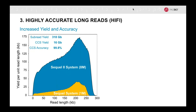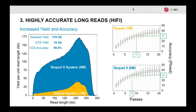I want to close with a comparison between the SQL system and the new Sequel II system for HiFi reads. The read length distribution is similar for Sequel and Sequel II, although the throughput for Sequel II is eight times higher, generating an average of 16 gigabases of HiFi data per Sequel II SMRT cell. In addition to higher yield, Sequel II has higher raw read accuracy, which means fewer passes around the SMARTbell library molecule are needed to generate HiFi reads that are 99.9% accurate, or QV30. For Sequel II, only eight passes are needed, whereas the Sequel system requires ten.